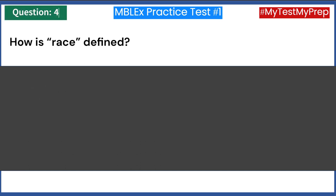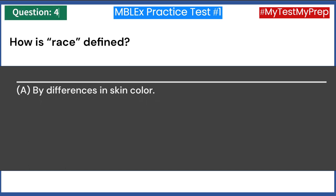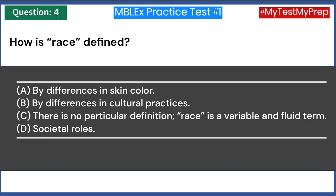How is race defined? A) By differences in skin color. B) By differences in cultural practices. C) There is no particular definition — race is a variable and fluid term. D) Societal roles. Answer: C — there is no particular definition; race is a variable and fluid term.